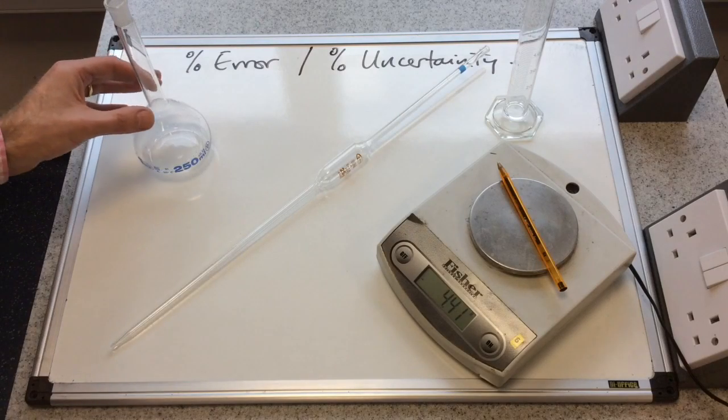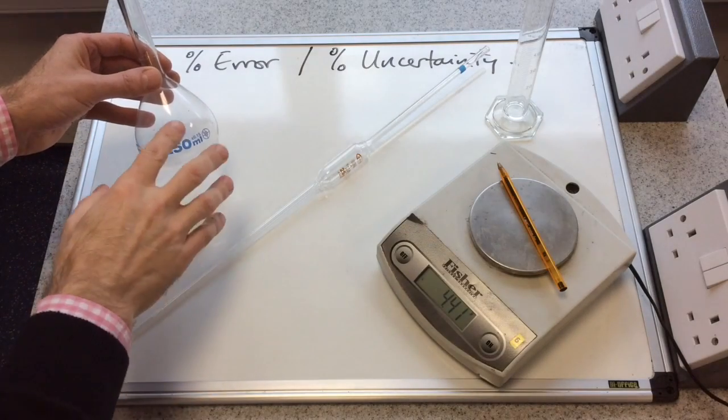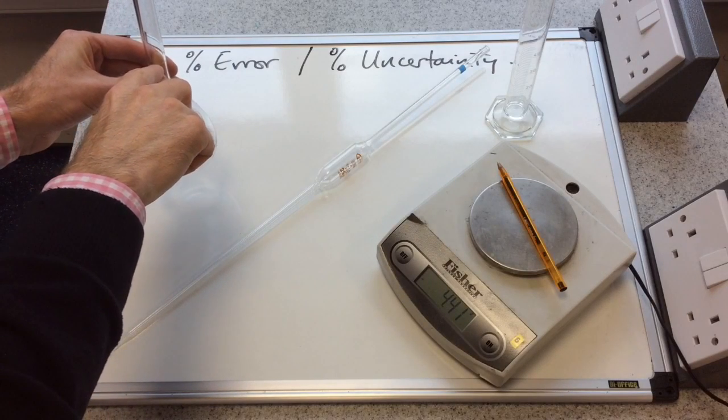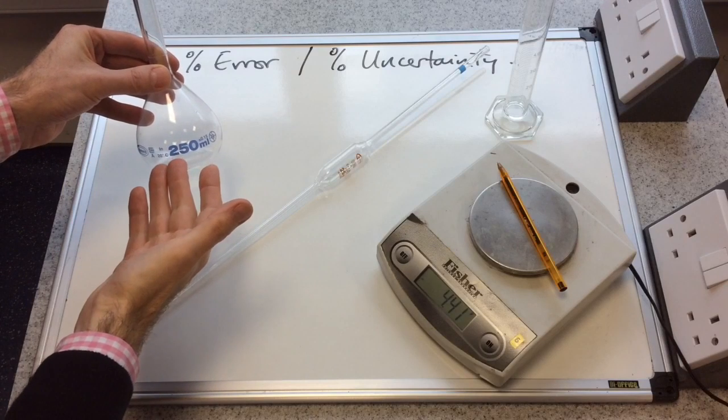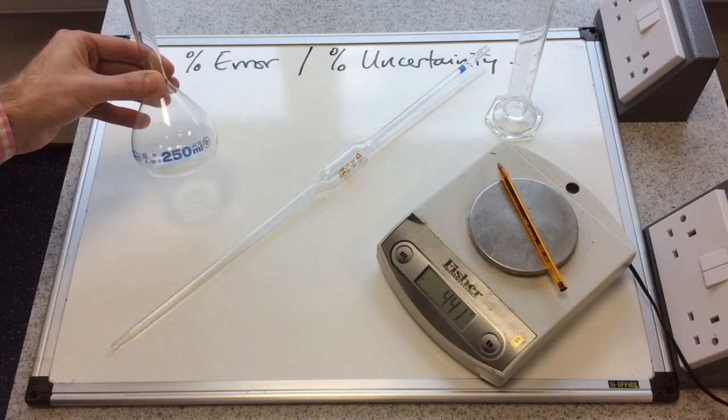So if we just take the 250 milliliter volumetric flask for example, when we fill this up with solution and we get the meniscus exactly on the line, then we would say that we have 250 milliliters of solution in that flask.